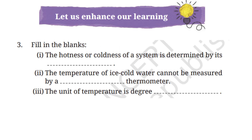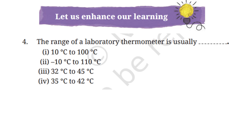Question 3, fill in the blanks: The hotness or coldness of a system is denoted by its temperature. The temperature of ice cold water cannot be measured via a clinical thermometer, and the unit of temperature is degree Celsius or degree Fahrenheit. Question 4: The range of a laboratory thermometer is usually −10°C to 110°C, so option 2 is the correct answer.